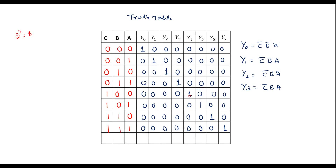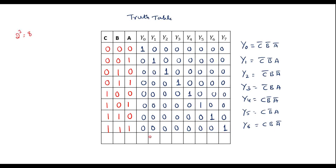For Y4, corresponding inputs are C=1, B=0, A=0, so Y4 = C·B̄·Ā. Similarly, Y5 = C·B̄·A. Y6 corresponds to C=1, B=1, A=0, so Y6 = C·B·Ā. And Y7 corresponds to C=1, B=1, A=1, so Y7 = C·B·A. These are all the boolean output expressions.